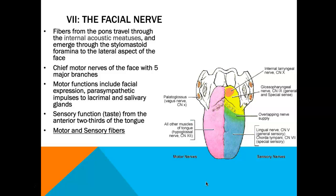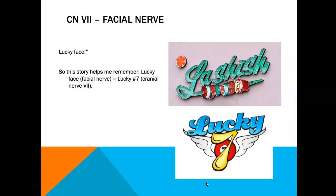The sensory function of the facial nerve is taste specifically from the anterior two-thirds of the tongue — so we have both motor and sensory fibers here. A personal memory tip: a waiter once said 'lucky face' to me at a restaurant when I was 17, and that story helped me remember that lucky number seven is the lucky facial nerve.